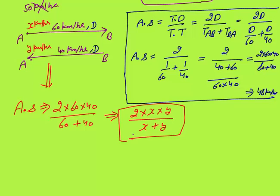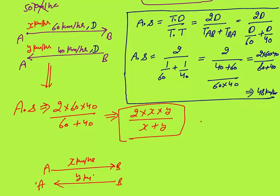So in general, if you are traveling from A to B at x km/h and from B to A at y km/h, your average speed will always be 2xy / (x + y). No need to memorize this — we have derived it.